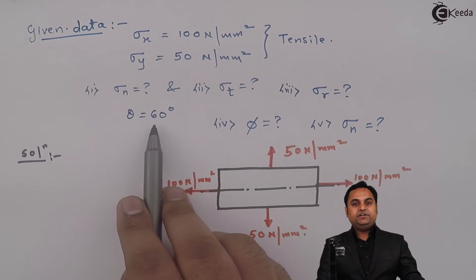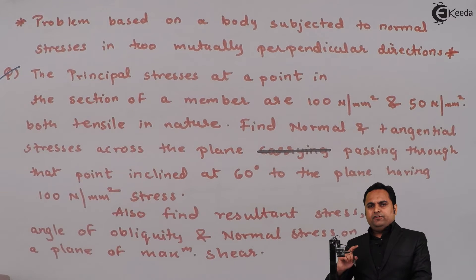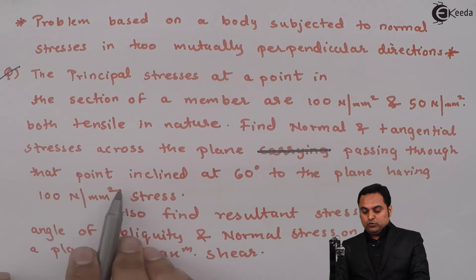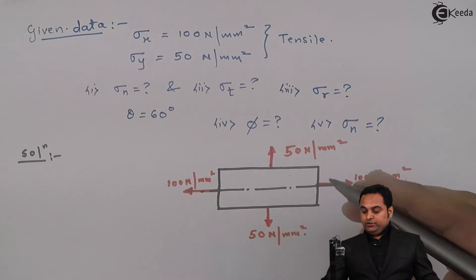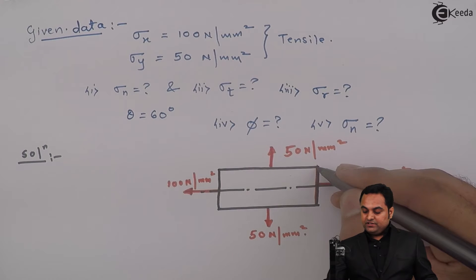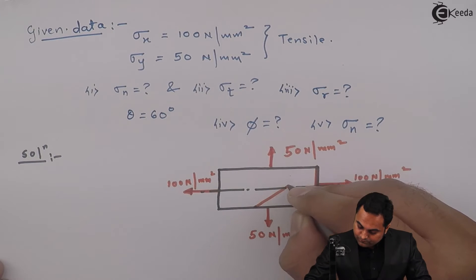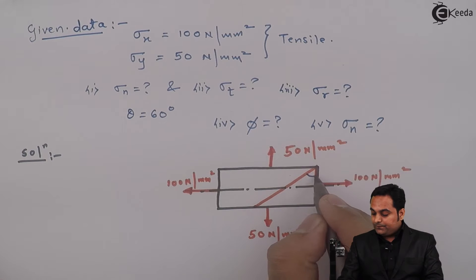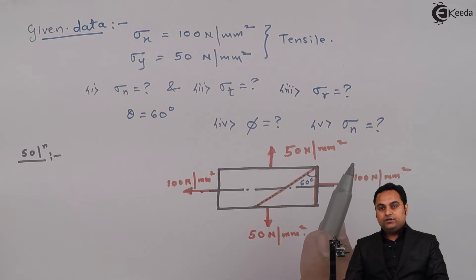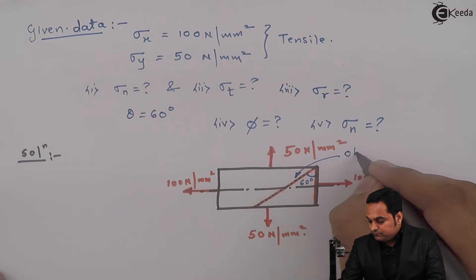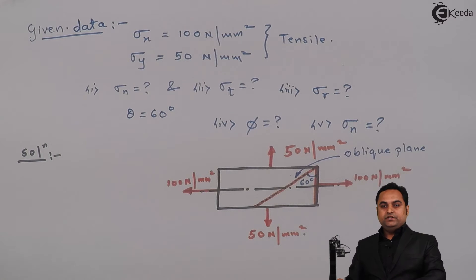Now, where is this theta? It was given to find the normal and tangential stresses across a plane passing through a point inclined at 60 degrees to the plane having 100 N/mm² stress. So this is the plane having 100 N/mm² stress, and the other plane is inclined at 60 degrees to it — this is the oblique or inclined plane on which we have to find all the stresses.